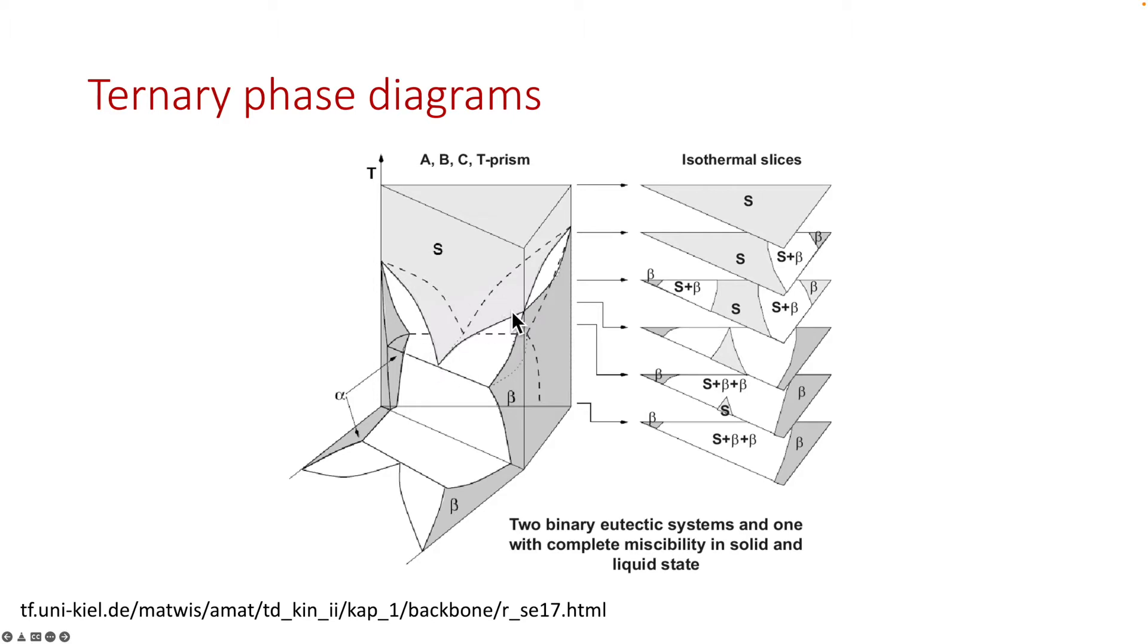You can also fix the temperature but vary the composition. Since the vertical axis is temperature, all you have to do is to take slices, and from each slice, you get an equilateral triangle.